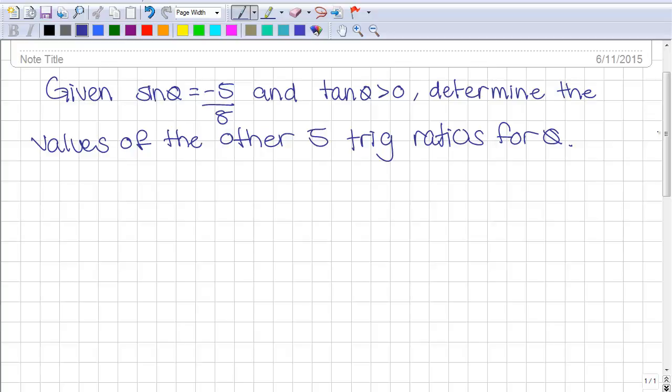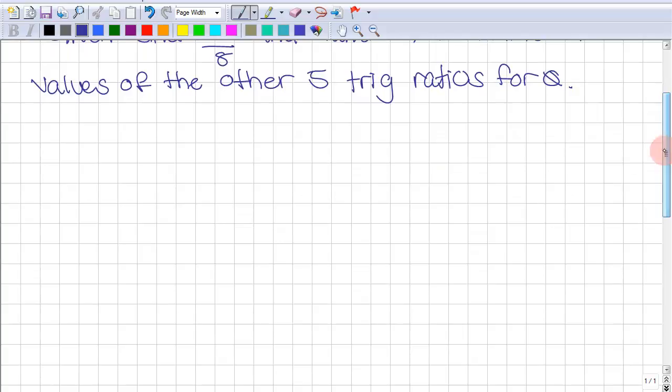So first thing we know is that the special triangle will either be in quadrant 3 or 4 because that's where sine is negative.